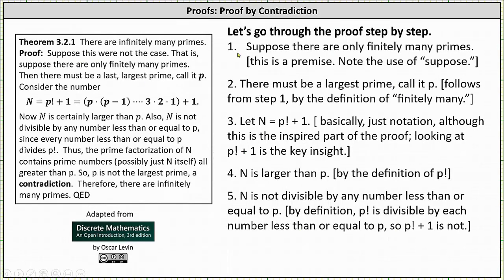Notice the proof is on the left. Step one: we suppose there are only finitely many primes — this is a premise; note the use of 'suppose.' Step two: there must be a largest prime, call it p — this follows from step one by the definition of finitely many primes. Step three, and this is key: we let n equal p factorial plus one. This is the inspired part of the proof; looking at p factorial plus one is the key insight.